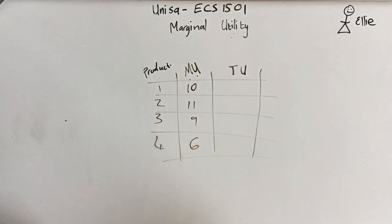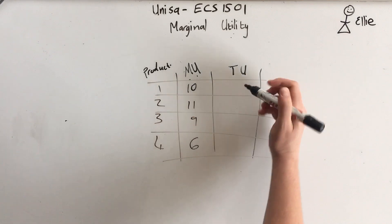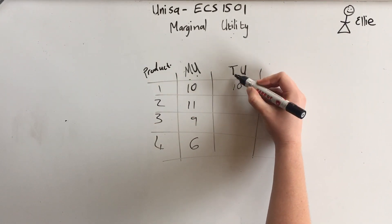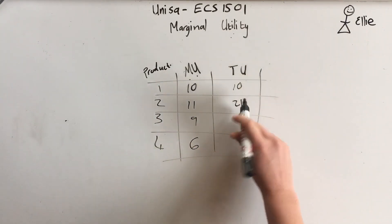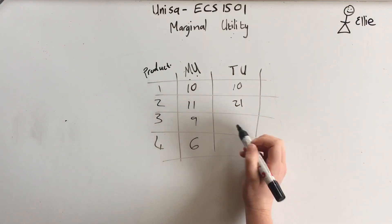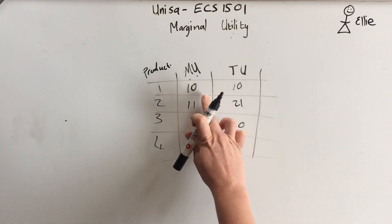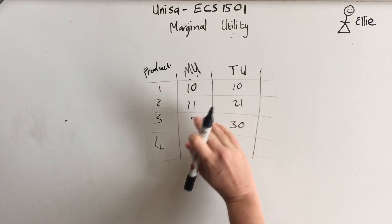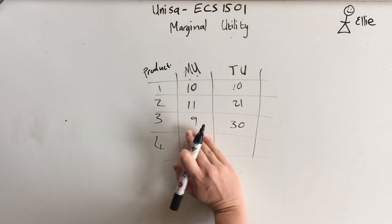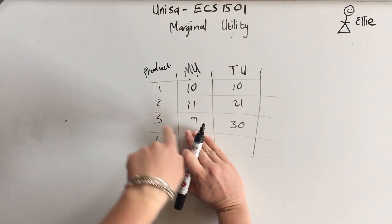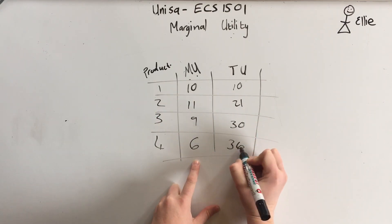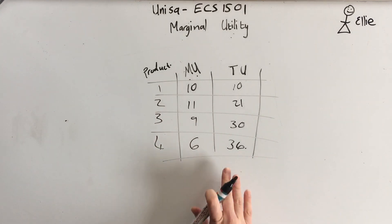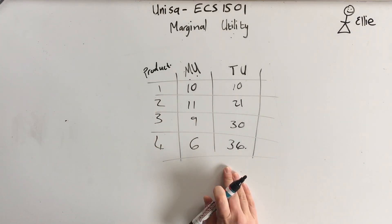They also give you total utility. One unit was ten, but total utility at two units was 21, at three units it was 30. So I'm adding them up: at one you've spent 10 points, at two you've spent 21 points, at three you've spent 30 points, at four you've spent 36 points. That is total utility.